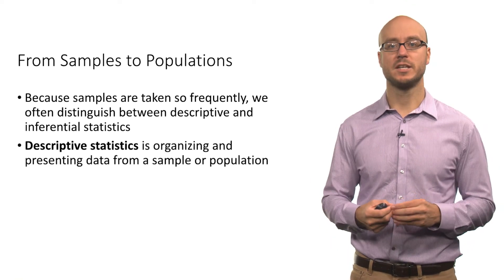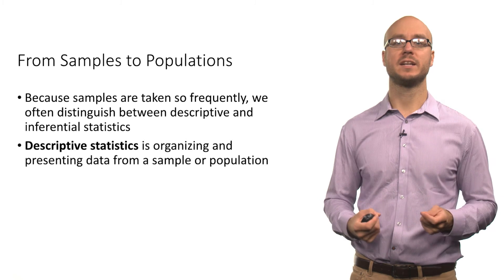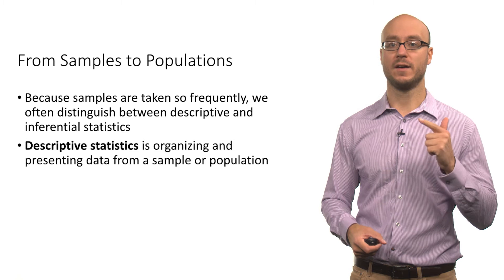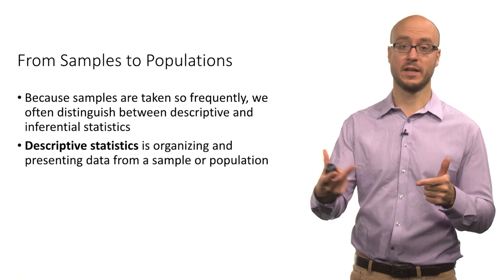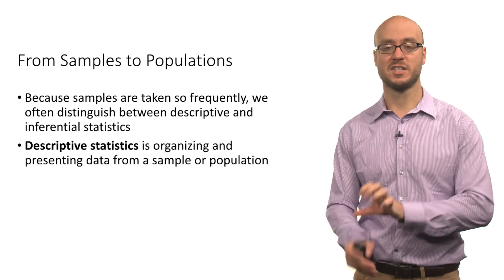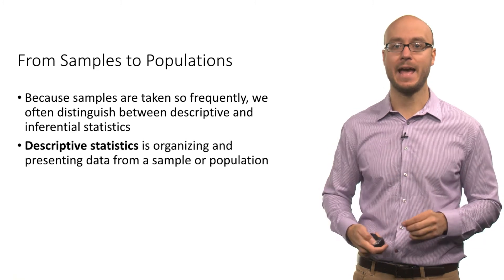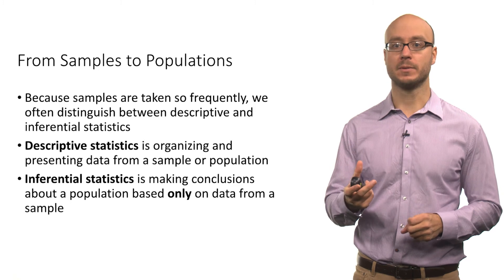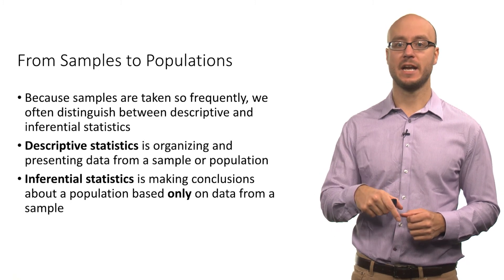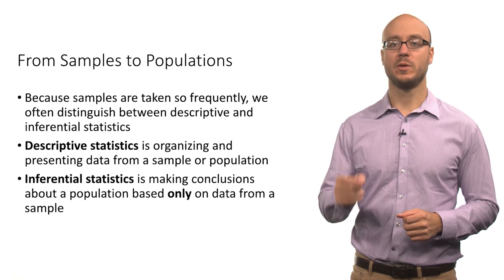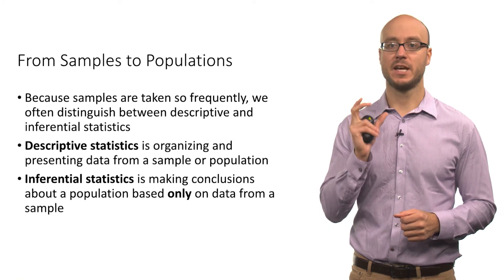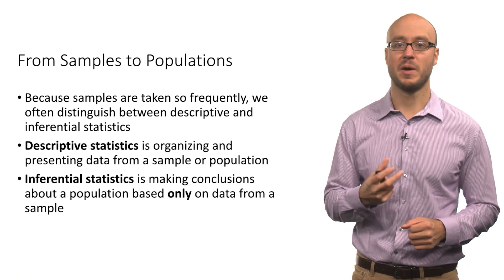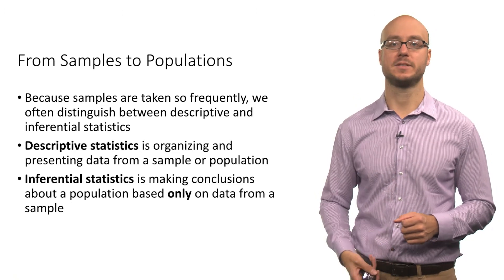Descriptive statistics is about organizing and presenting data from a sample or population. You have a sample or population of data, and descriptive statistics just describes the data at hand. Inferential statistics is about making conclusions about a population based only on data from a sample — you're trying to say something about a population based on a sample of data.